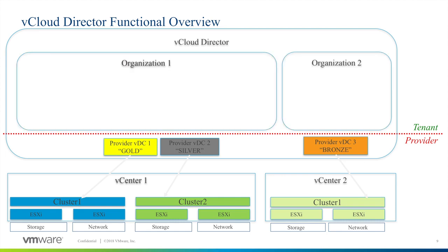The Cloud Director supports multi-tenancy through the use of organizations. An organization is a unit of administration for a collection of users, groups, and computing resources. Users authenticate at the organizational level, supplying credentials established by an organization administrator when the user was created or imported. System administrators create and provision organizations, while organization administrators manage organization users, groups, and catalogs.